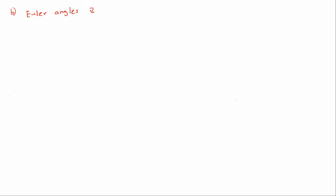So now let's have a look at part B. The question asked us to find the Euler angles of rotation for the Z, X, Z combination. And what this means is that the frame or the gripper was rotated about the Z axis, then about the X axis, with the final rotation about the Z axis. The notation Z prime, X prime, Z prime is used to show that it is an Euler angle representation. To each of these three rotations, we can assign an arbitrary angle such as alpha, beta and gamma.